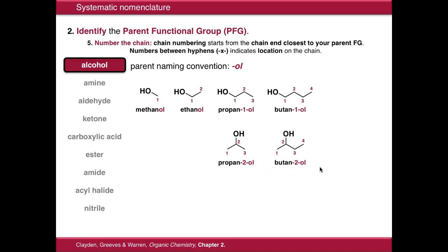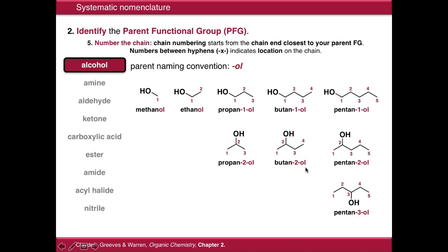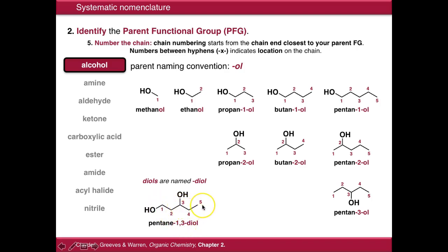Moving further along, we can get different isomers of butanol: butan-1-ol and butan-2-ol. Note that you can't have butan-3-ol, because your chain numbering needs to start at the end closest to your parent functional group. If we move the OH group, this would become carbon number one and it would still be butan-2-ol. For pentanol, we now have three isomers: pentan-1-ol, pentan-2-ol, and pentan-3-ol. If we have two alcohol groups in the same molecule, these are called diols — we indicate where the alcohol groups are present on the chain by putting the numbers between hyphens. So this is pentane-1,3-diol.